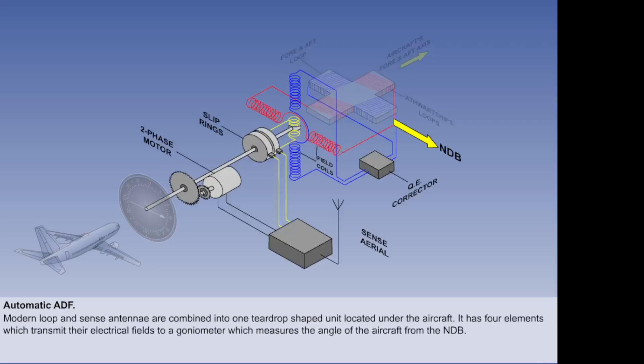The electrical fields produced in the loops are transmitted to a goniometer, a device for measuring angles. This consists of four field coils, which reproduce the electromagnetic field detected by the loop antenna. Within these four elements is a search coil, which always wants to be aligned to the null position in the electromagnetic field.